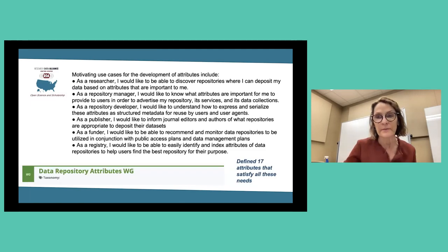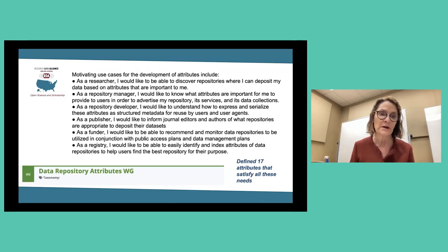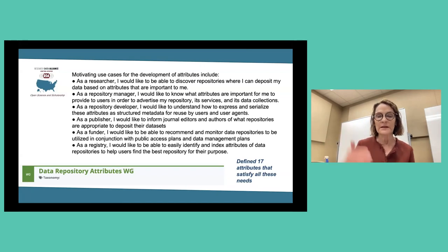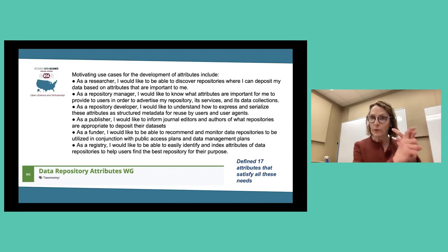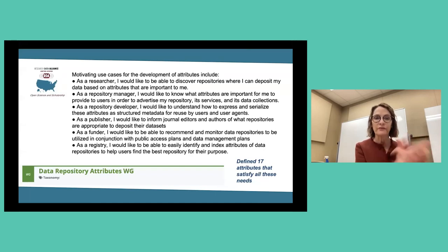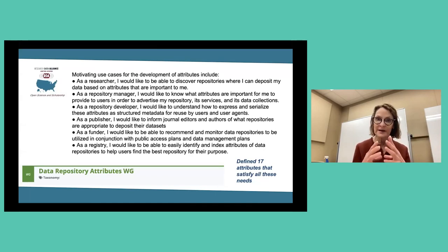The third example is the Data Repository Attributes Working Group, which is just now entering community comment. They came up with 17 attributes that every repository should have, grounded in use cases: the researcher, the repository manager, the repository developer, the publisher, the funder, and the registry — producing a set of 17 attributes that satisfies all of these different personas.